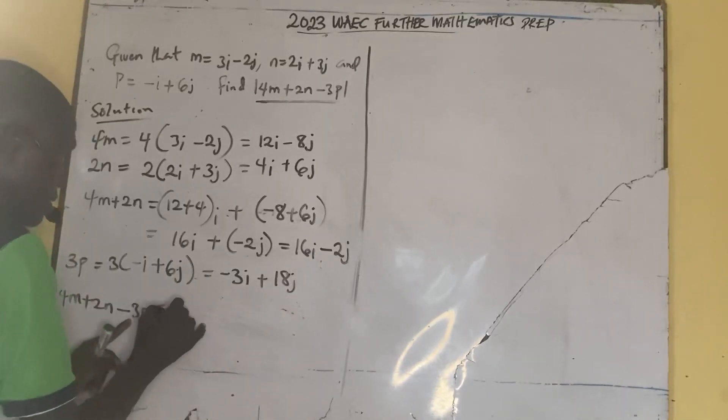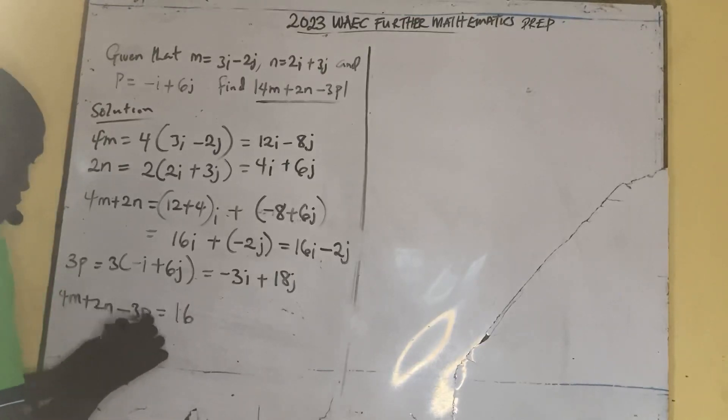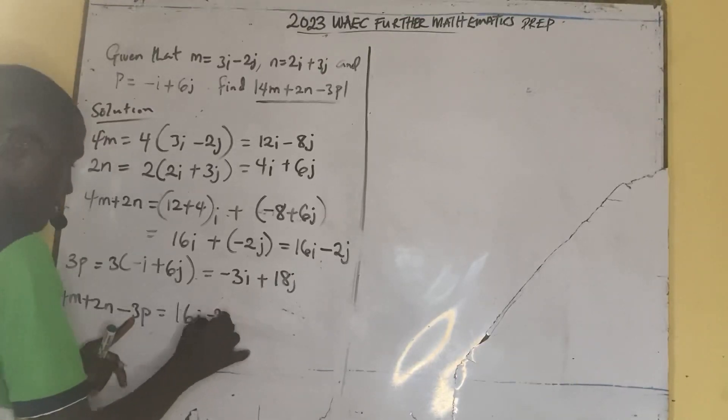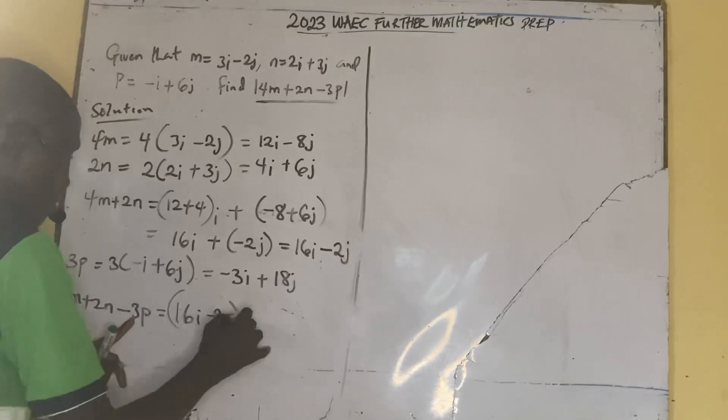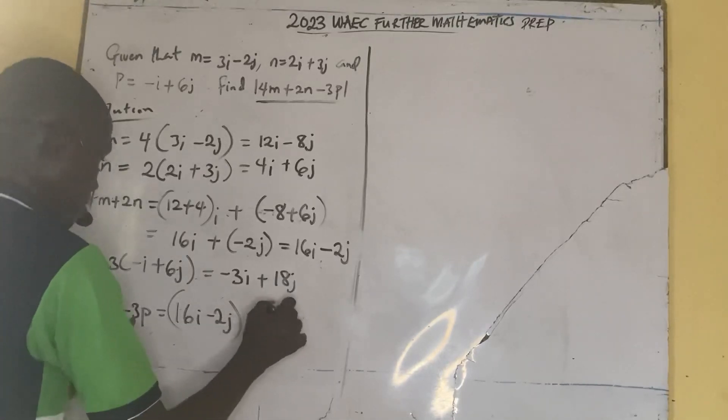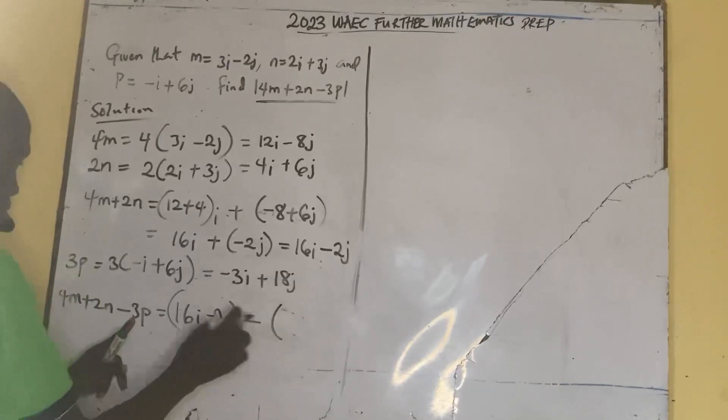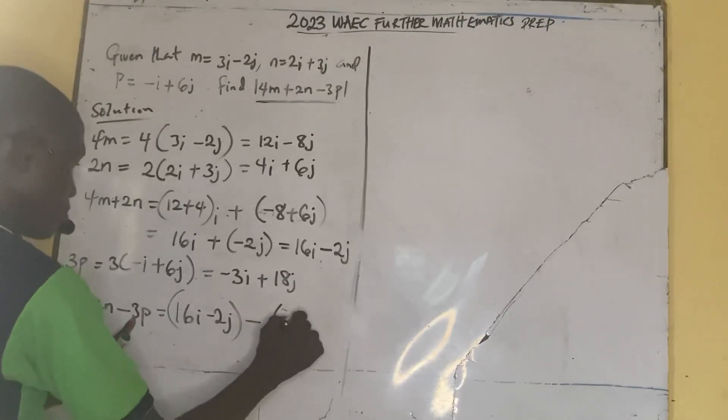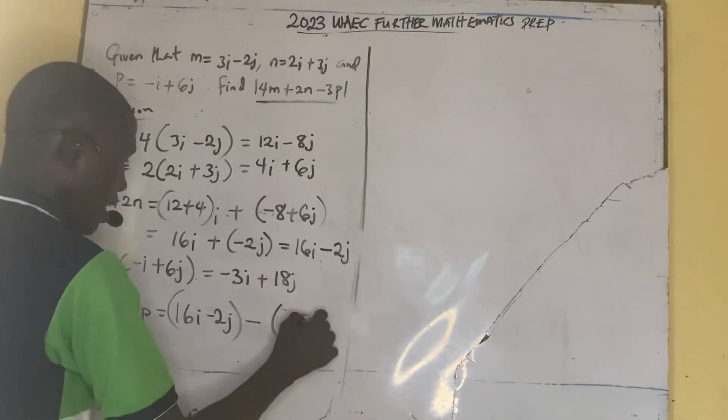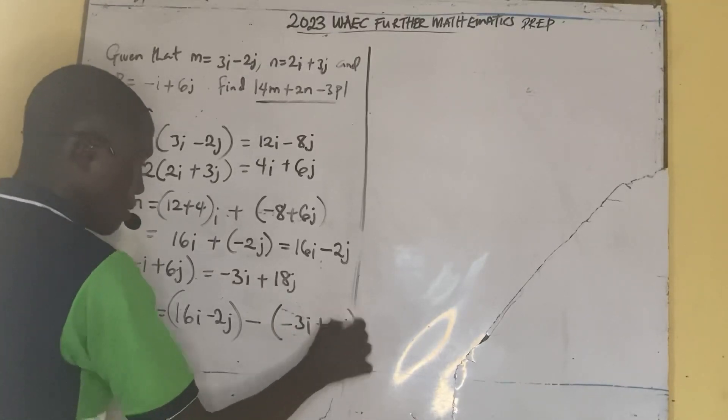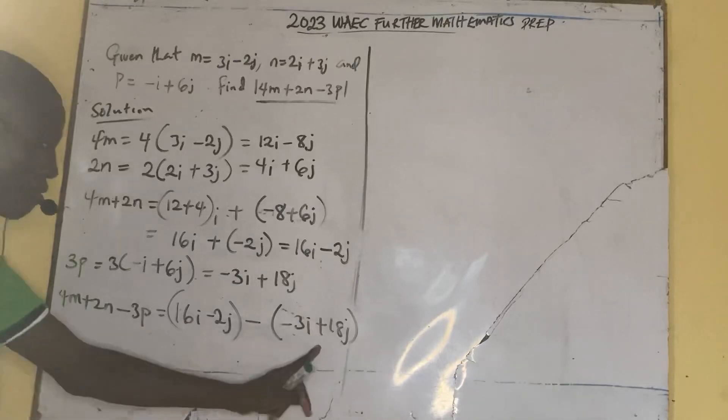We now be equal to, we have minus 3i plus 18j for this p. Then we have this one for this addition of these two. So we now say okay, 16i minus 2j for this one minus this one. We have 16i minus 2j into brackets minus open bracket. Now you are minusing this. You are taking away this from this.